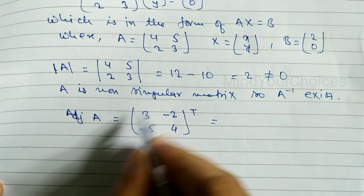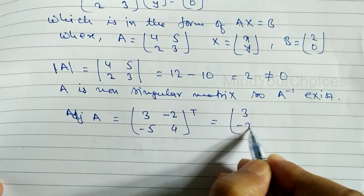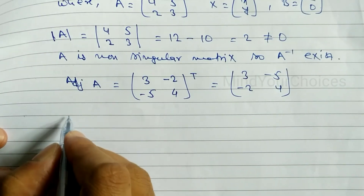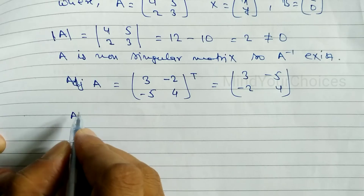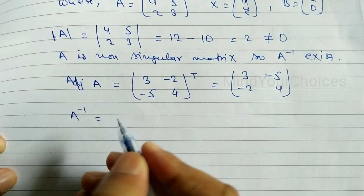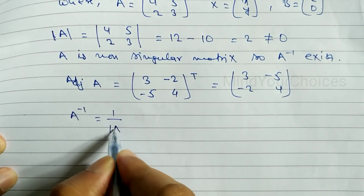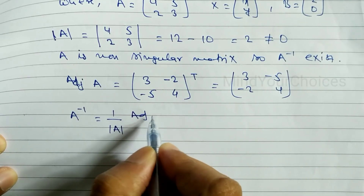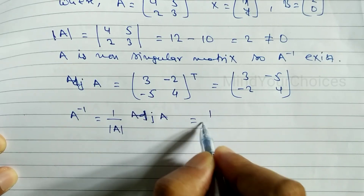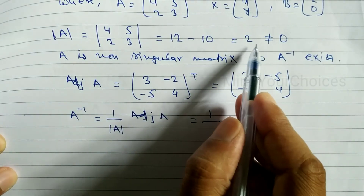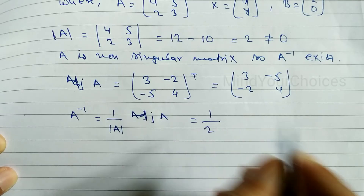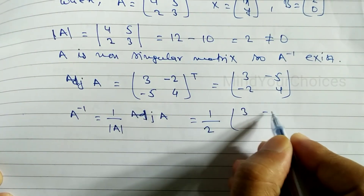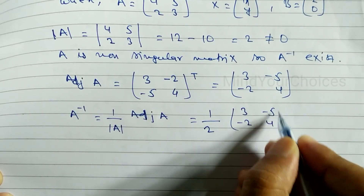Now we find the transpose of the cofactor matrix: [[3, −2], [−5, 4]] becomes adjoint A = [[3, −5], [−2, 4]]. The inverse of A is given by the formula: A inverse = (1 / det A) × adjoint A = (1/2) × [[3, −5], [−2, 4]].